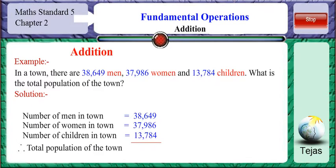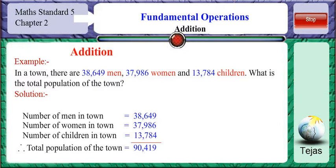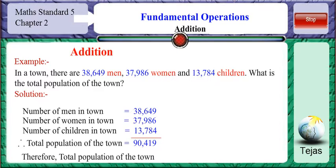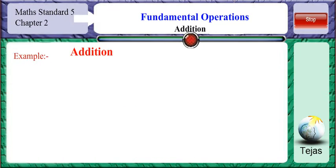The total population of the town is the sum of all three numbers: 38,649 plus 37,986 plus 13,784, which is equal to 90,419. Therefore, the total population of the town is 90,419, which is the sum of the total number of men, women and children in the town.